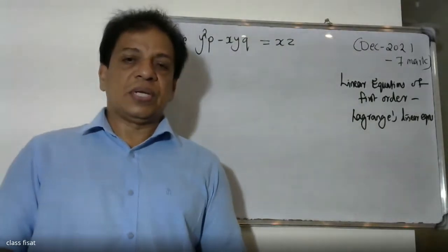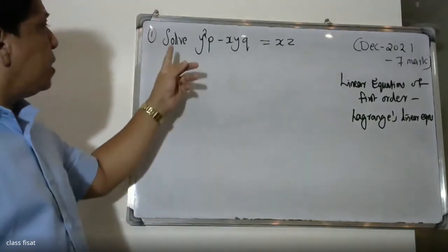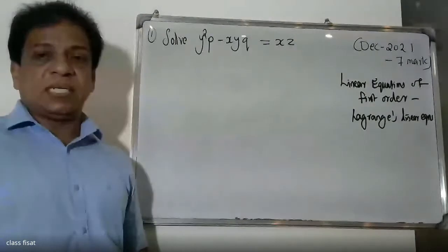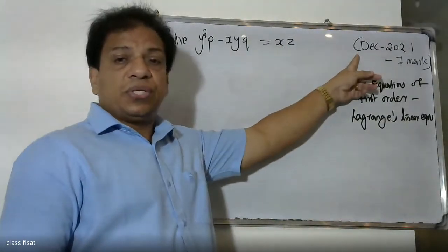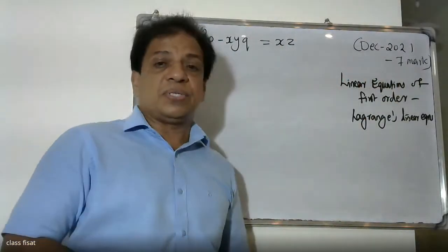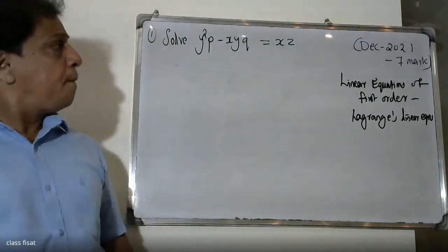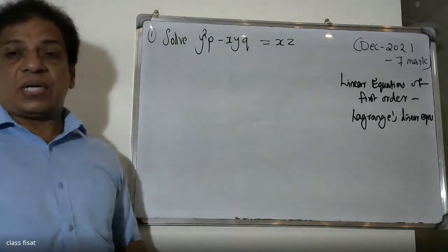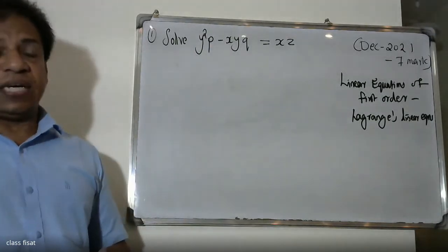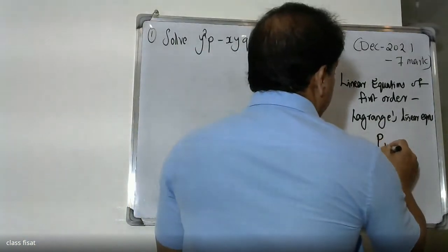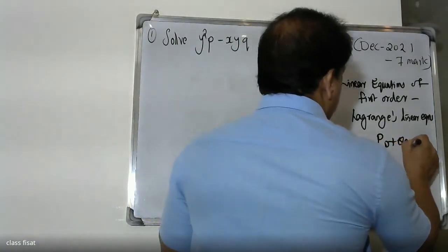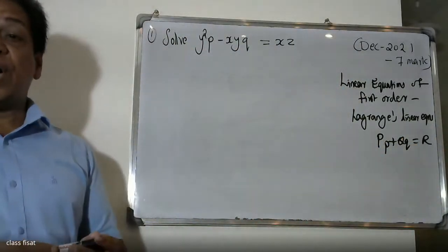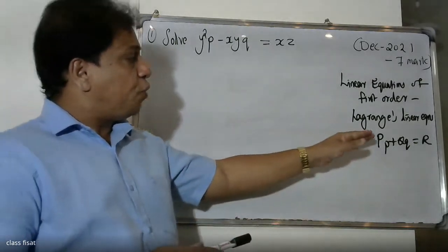Good morning students. We have the equation y² p minus xy q equals x. This is the case of the first order Lagrange's linear equation, written as Pp plus Qq equals R, where capital P, capital Q, and capital R are functions of x, y, z.